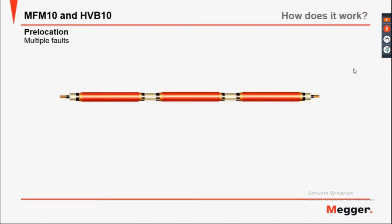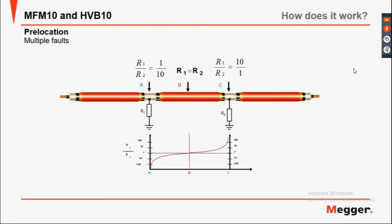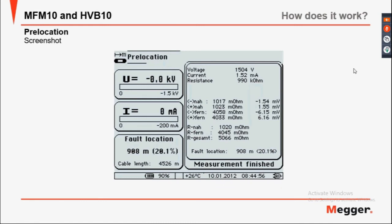Prediction of multiple faults: when there are two faults with very similar resistances, the pre-location will give a result midway between the two faults, as a virtual point is indicated depending on the resistances. The closer the resistances are together, the more equal the result will be between them. If one fault has a higher resistance, the lower resistance fault will appear closer to it. The pre-location screen shows near-end and far-end resistances and voltages.